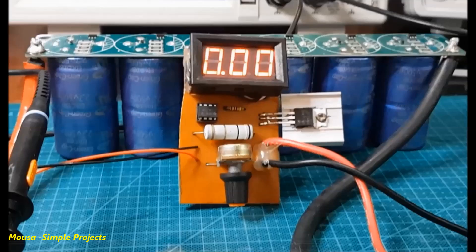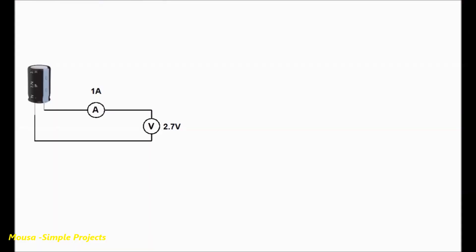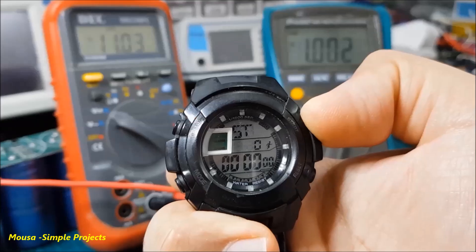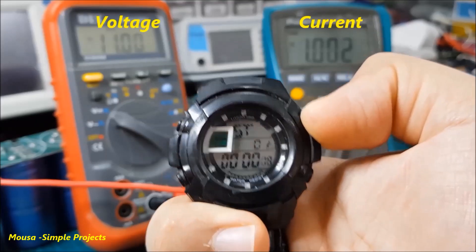One farad capacitor is a capacitor that if you discharge it with a current of one amp, the voltage of it drops one volt after one second. So we come up with this formula.